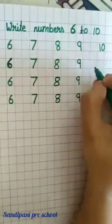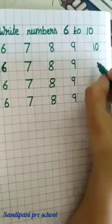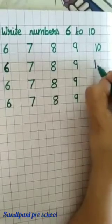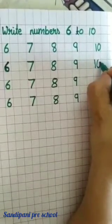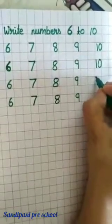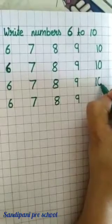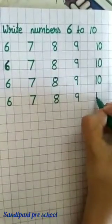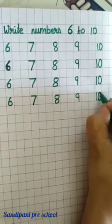Now, which number is this? Number 10. So, how to write number 10? Standing line and 0, so number 10. Standing line 1 and 0 — 10. 1, 0, 10.